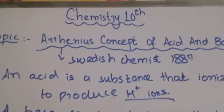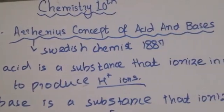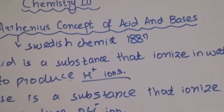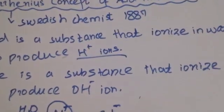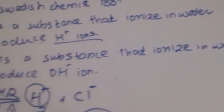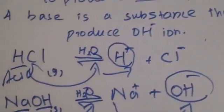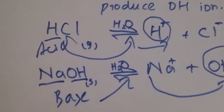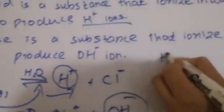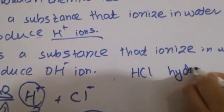In this way, we understand that an acid will produce H⁺ ions, and similarly a base will produce OH⁻ ions. I have told you about HCl, that is hydrochloric acid — you need to know their names.